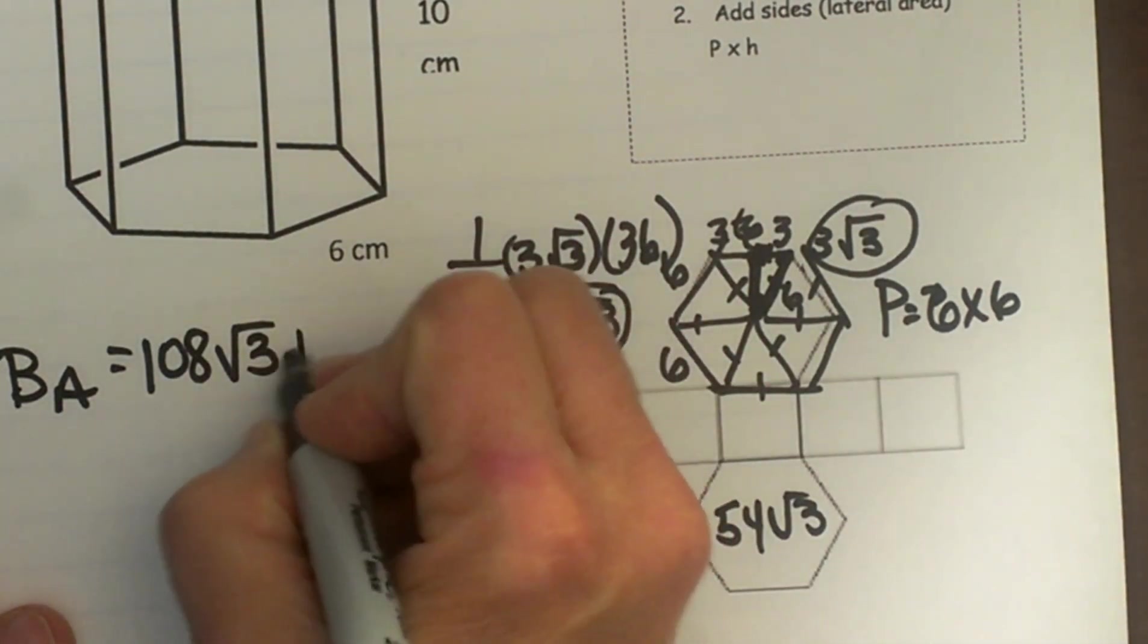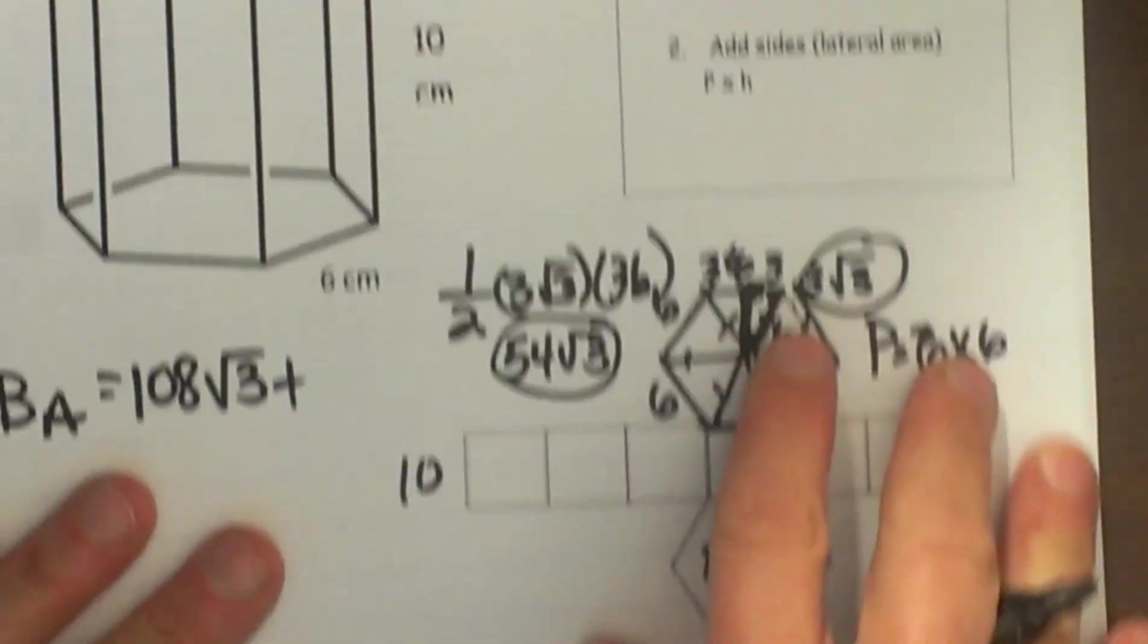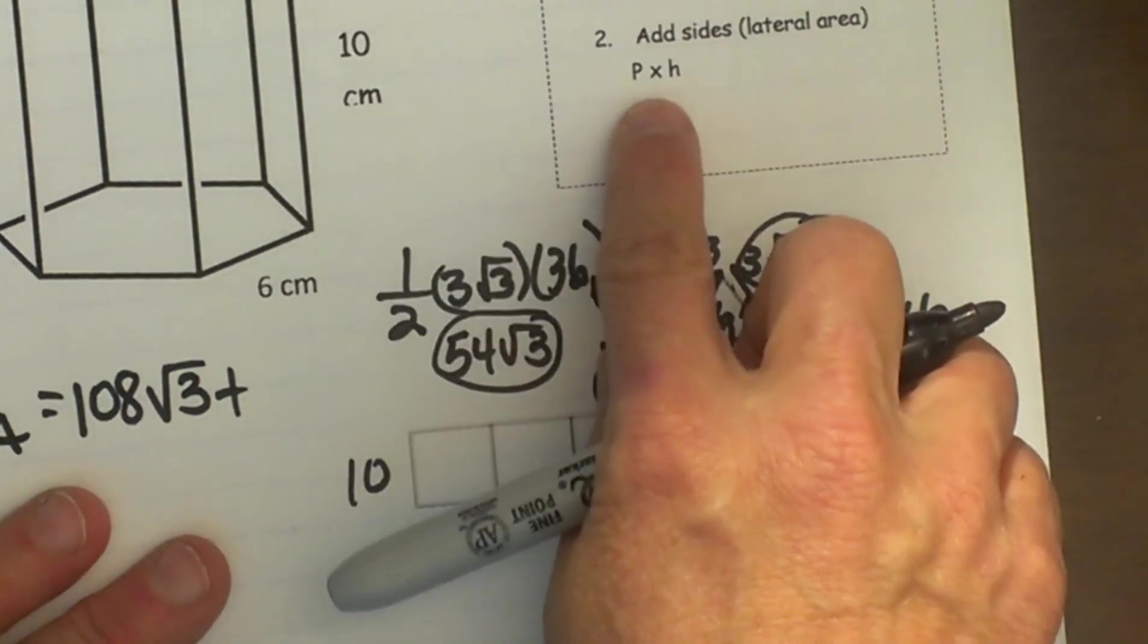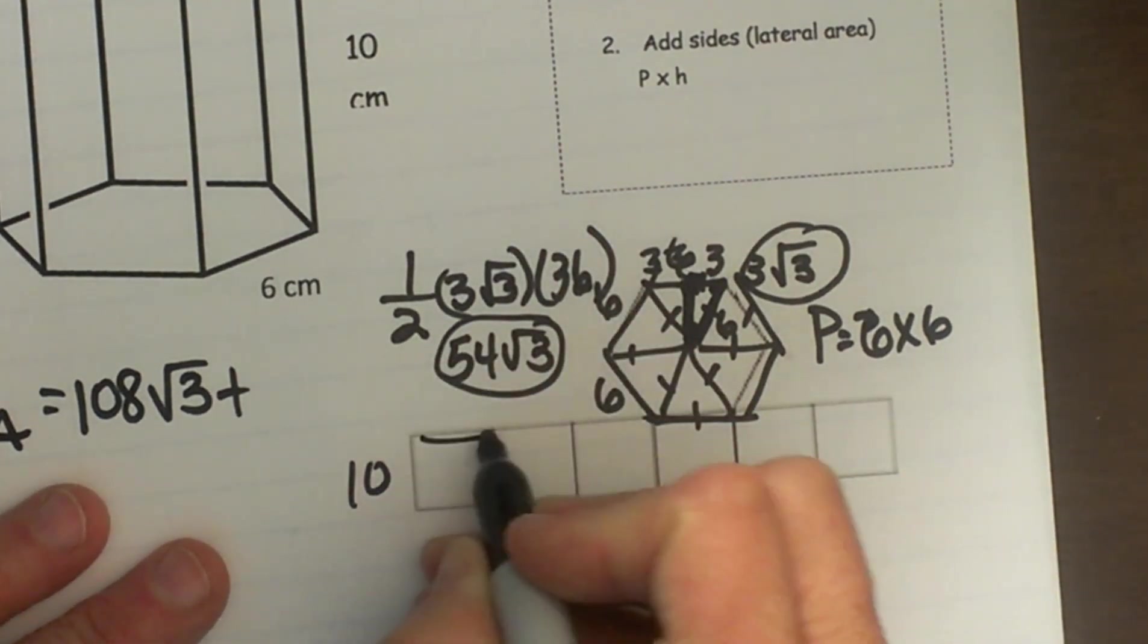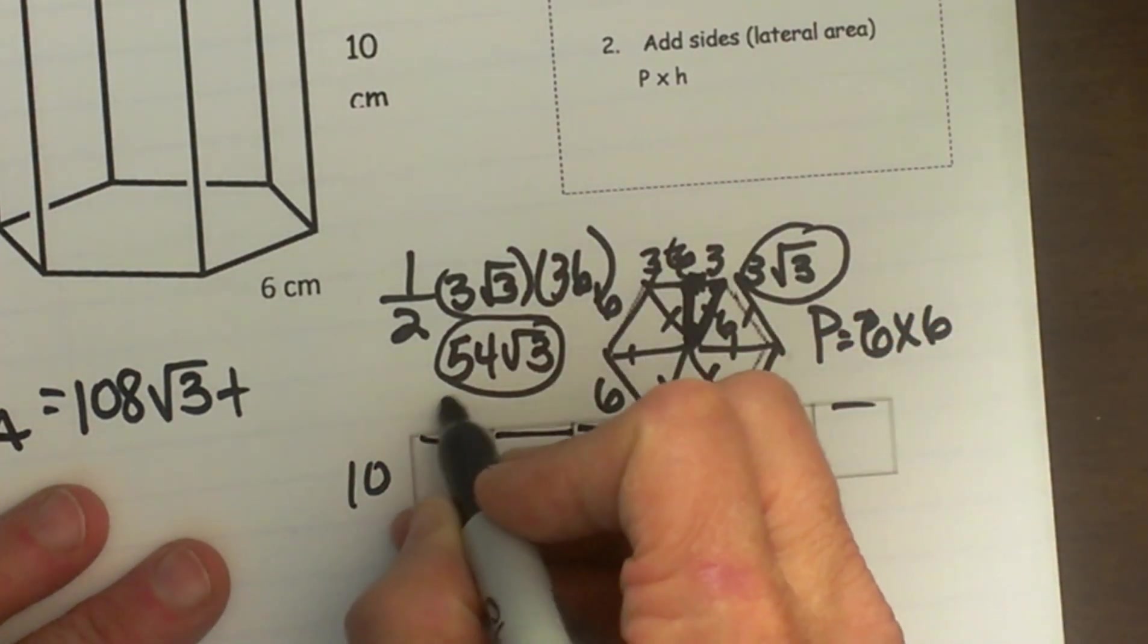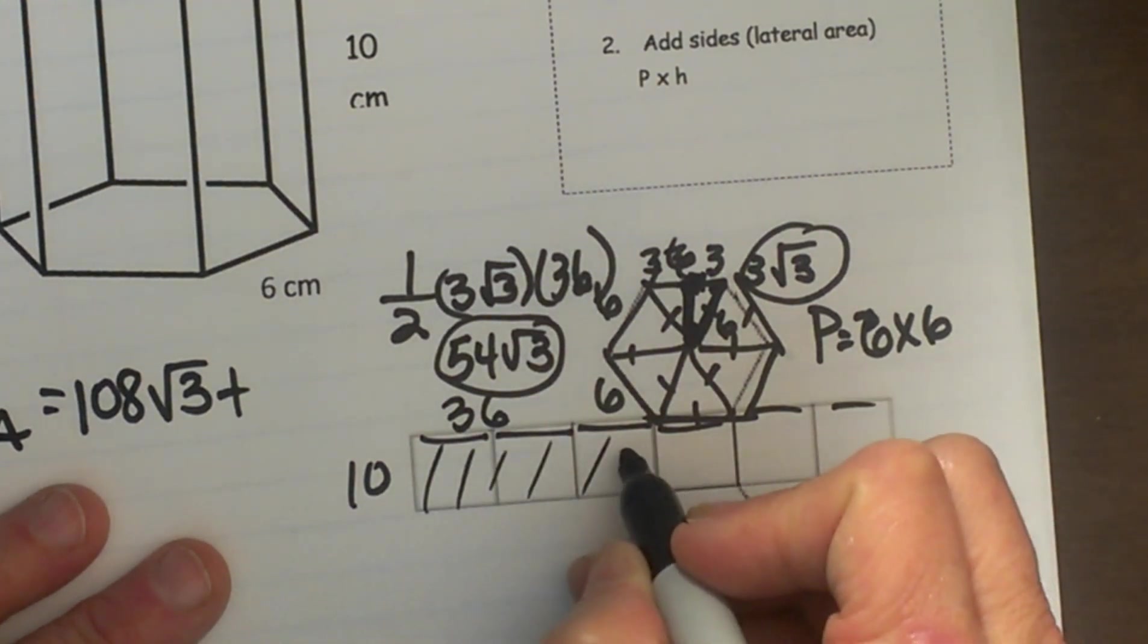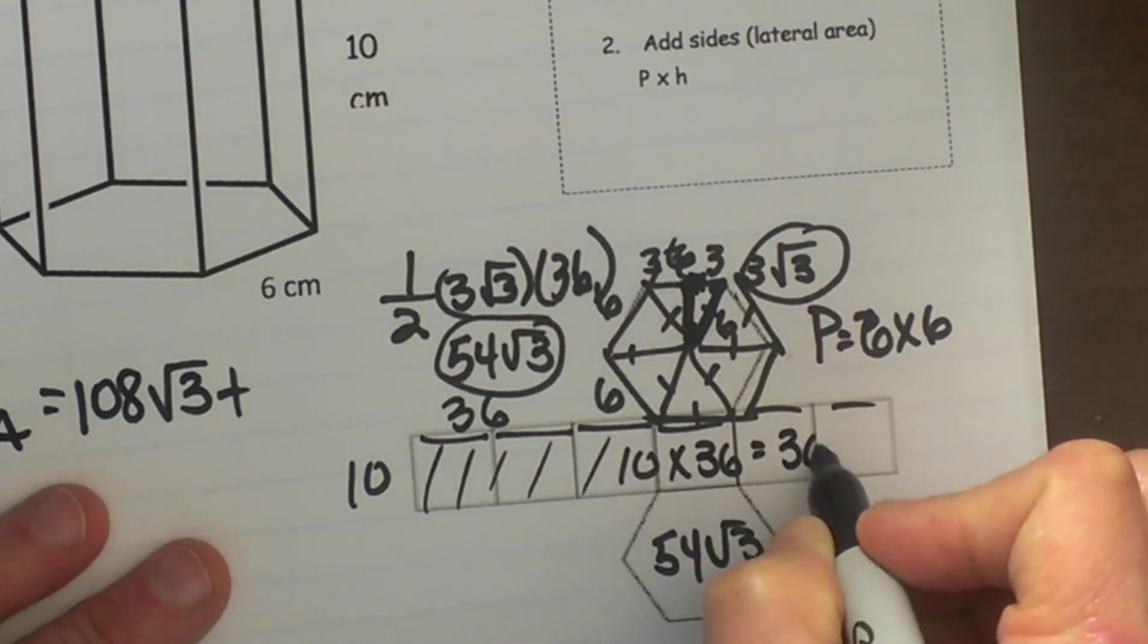Now I am going to add to it this rectangular shape which is the lateral area, the sides around here. Well the formula for doing that is just the perimeter times the height. Well my height is 10 and we just figured out the perimeter. If I took this and I wrapped this around that is just the perimeter which we decided was 36. So that means our lateral area is 10 times 36 or 360.